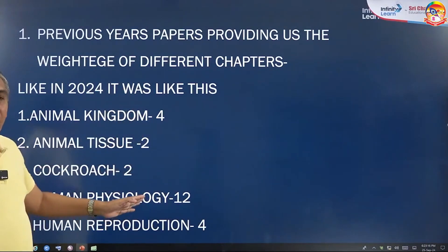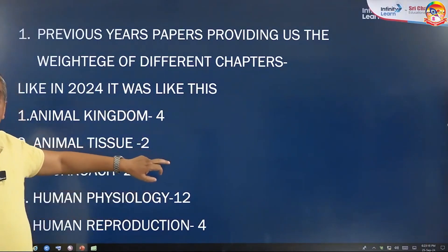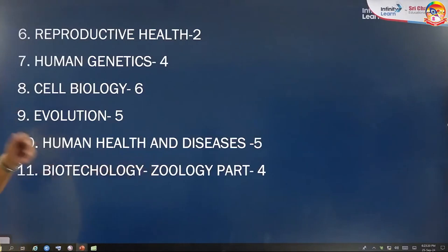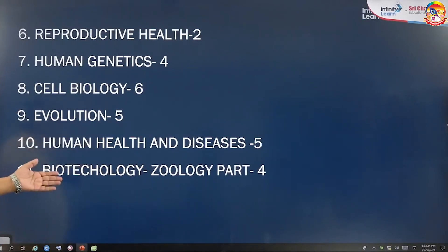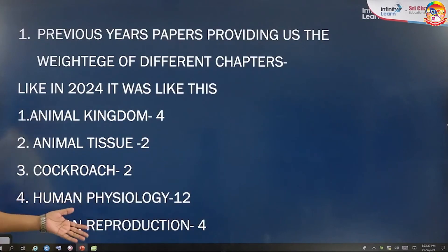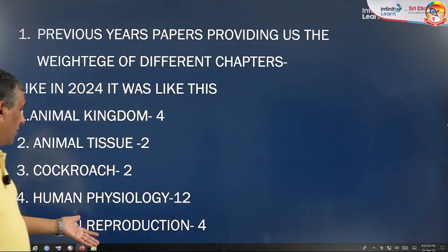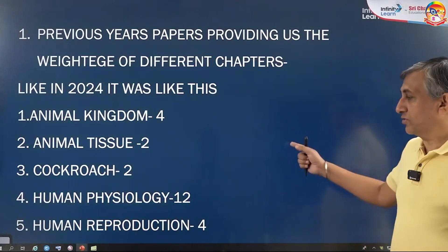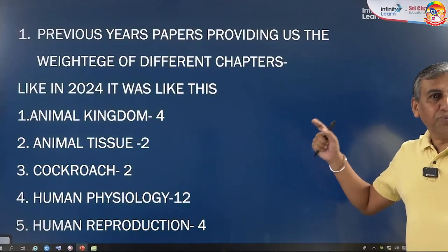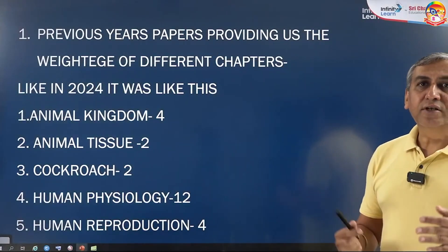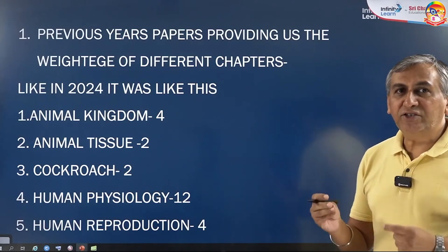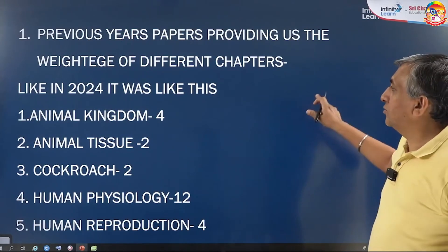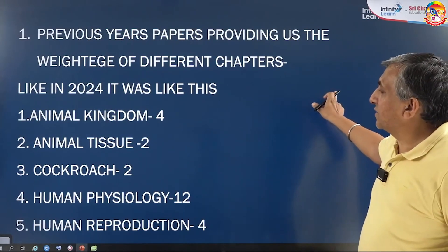The huge profit of PYQs is that you are able to analyze the importance of topics — which topic is more important, which is less important. If you want to select the most important topic, I will say first prepare Human Health and Disease because the weightage is five questions. Then prepare Human Reproduction and Reproductive Health — the weightage is four to six questions. PYQs help us decide which topic is more important based on previous year trends.